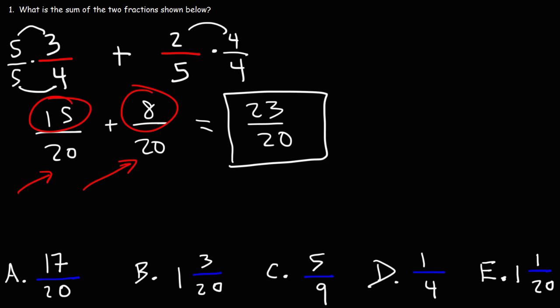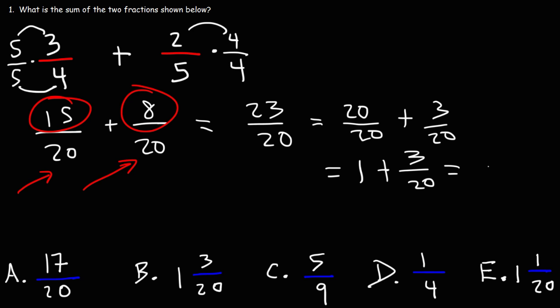But we don't see that here. So we need to convert the improper fraction into a mixed number. It's improper because the numerator exceeds the value of the denominator. 20 goes into 23 one time. So I'm going to break down 23 into 20 plus 3. Because 20 plus 3 is 23. Now 20 divided by 20 is 1. So you get 1 plus 3 over 20, which you can write as a mixed number, 1 and 3 over 20. So the correct answer for this example is answer choice B.